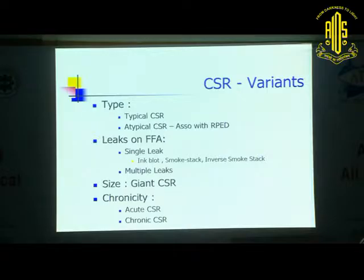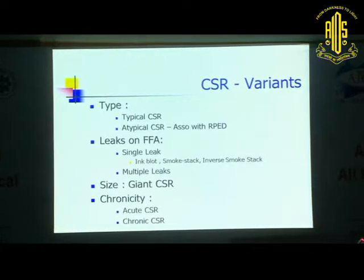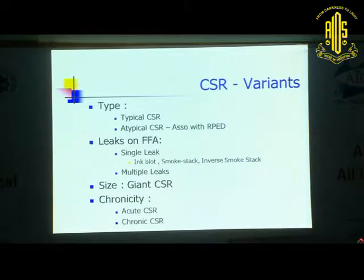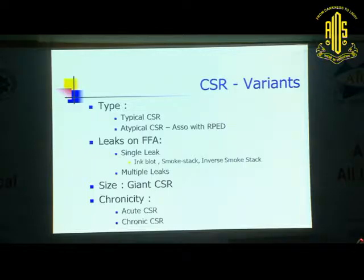CSR has variants. There is typical CSR as just described, and atypical or type 2 CSR which is associated with RPE detachment also. On angiography it could be a single leak — inkblot, smokestack, or sometimes inverse smokestack. Or it could be giant CSR where the pathology is not confined entirely to the posterior pole but presents as a huge CSR. It could also be multiple-leak CSR.